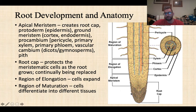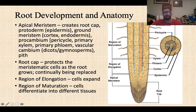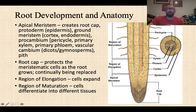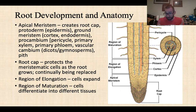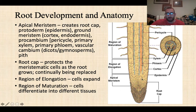Looking at root anatomy, at the very tip of our root we have a root cap. The root cap protects the growing part of the root — it's made up of cells that get damaged as the root grows through soil and are continuously replaced. Right behind the root cap we have the apical meristem, which is found at the tips of roots and shoots and is responsible for primary growth. This apical meristem is essentially what is going to produce all the tissues in the root, at least initially.